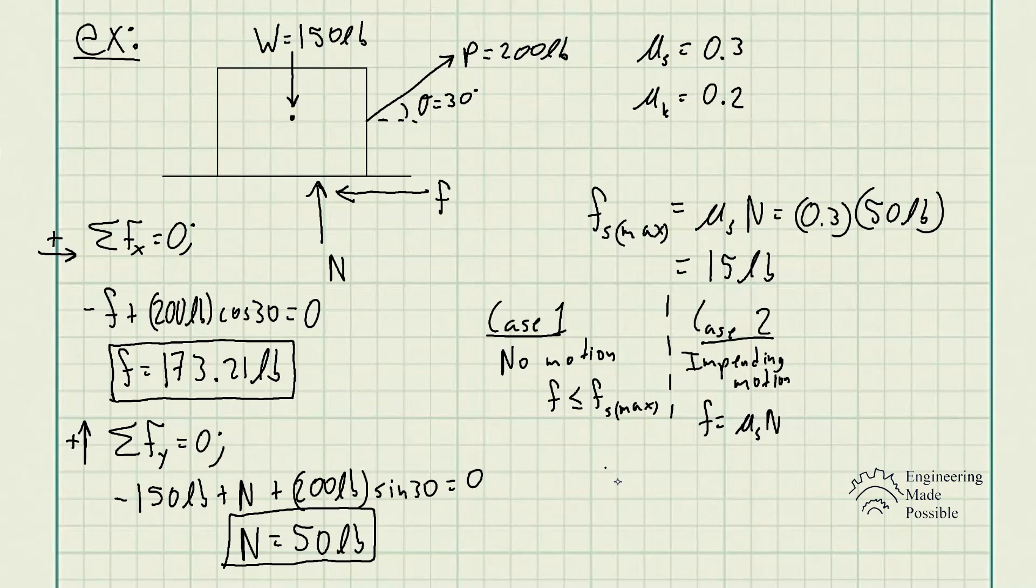This means it must be case three, where there is motion. The equation we need to use is the kinetic frictional force, which is the coefficient of kinetic friction times the normal force. So the actual frictional force at the surface is the kinetic friction, which is 10 pounds. The 173 pounds is incorrect.